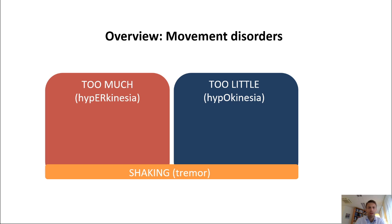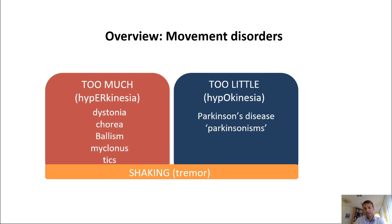I want to keep tremor apart as its own category. There are certain symptoms you can divide into the hyperkinetic category, such as dystonia, chorea, ballism, myoclonus, and tics. In the hypokinetic category there's basically Parkinson's disease and diseases that look like Parkinson's disease, which we call Parkinsonisms, or atypical Parkinsonism.